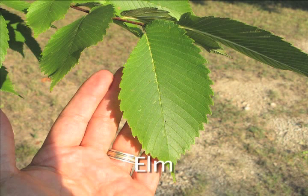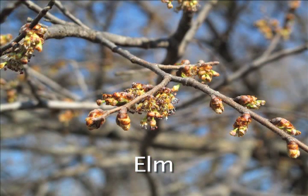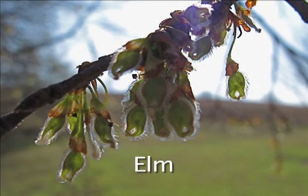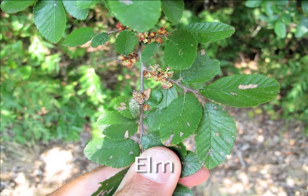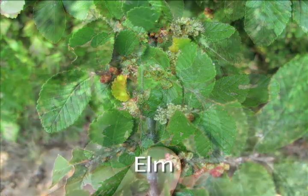Elm trees are sources of allergenic pollen and are found throughout the United States. The flowers are small and shed pollen for a fairly short period of time, and the small seeds mature quickly. Some species of elm blossom and shed pollen in the fall. Cedar elm, or fall-blooming elm, is common in Texas and the southwest. Cedar elm leaves are small and the flowers are not very prominent.